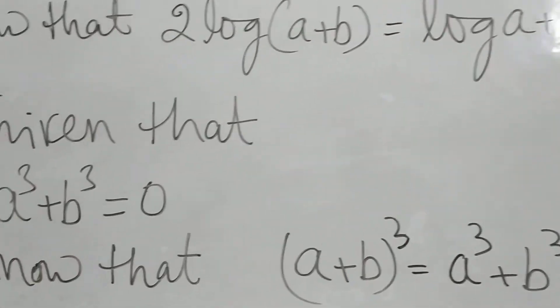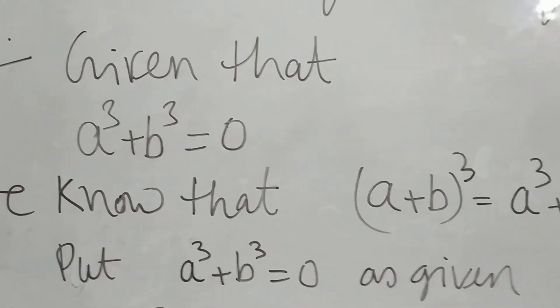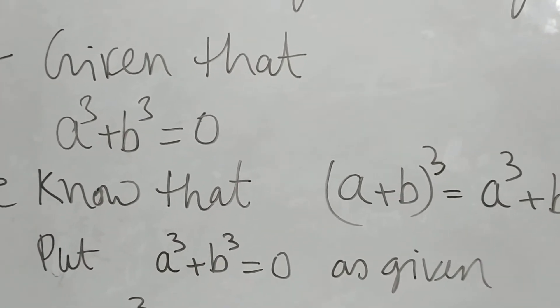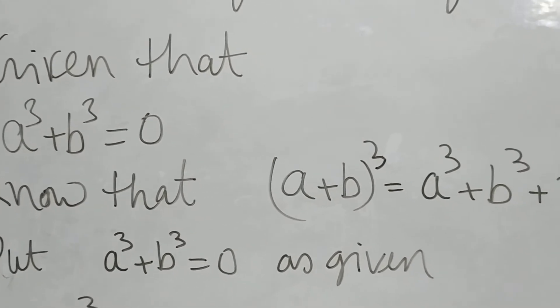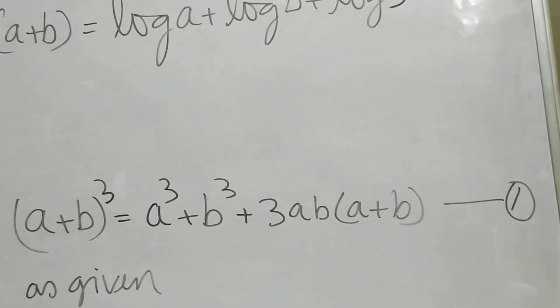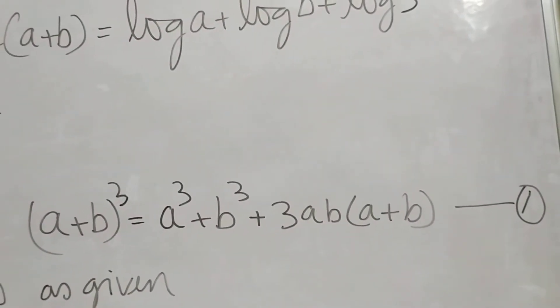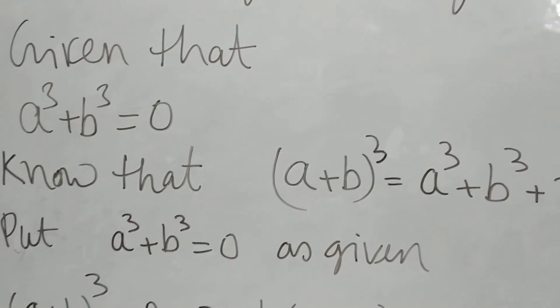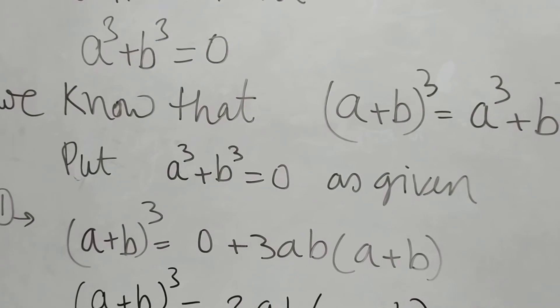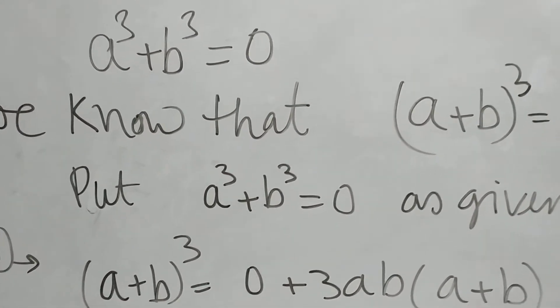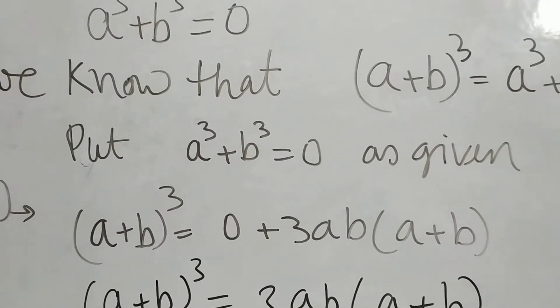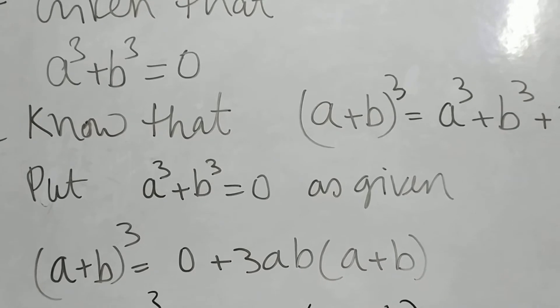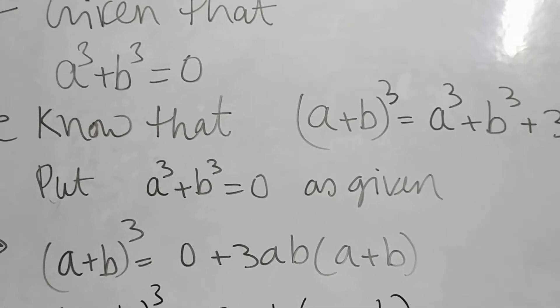Just note down. We know that a³+b³=0 given in the question, so put a³+b³=0 in this equation, the formula we have taken as equation 1. Put a³+b³=0 in this equation, then we will get a³+b³ is 0, so finally (a+b)³=0+3ab(a+b).